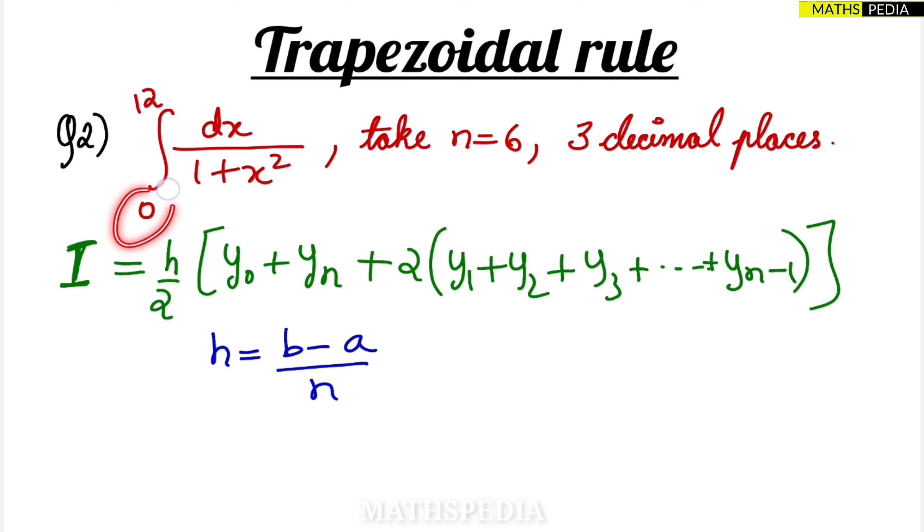b and a are nothing but lower limit and upper limit. So what is a and b? So before this, let me just write here - a is the lower limit and b is the upper limit. So n value is given in the question, just substitute you will arrive at the answer for h.